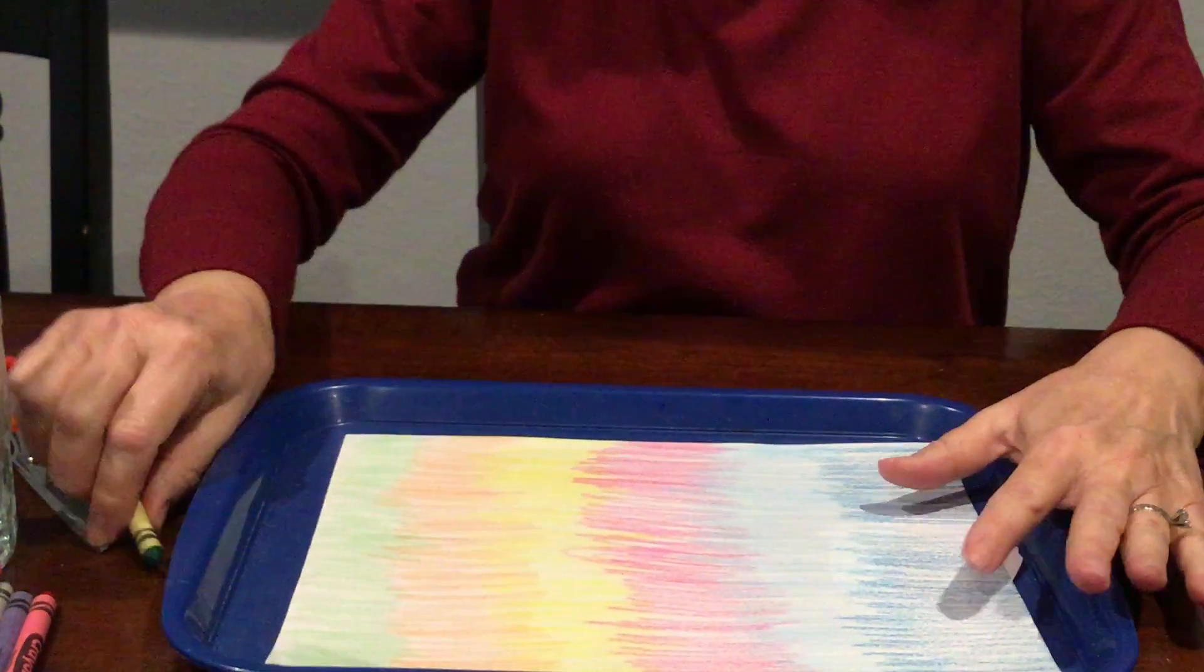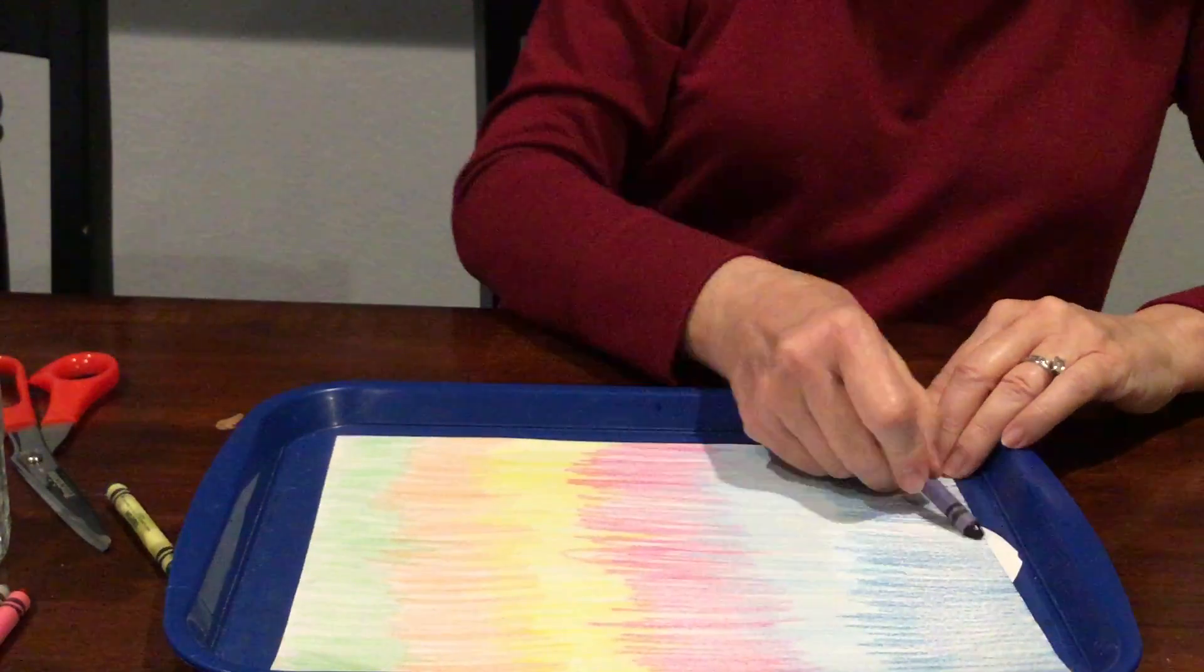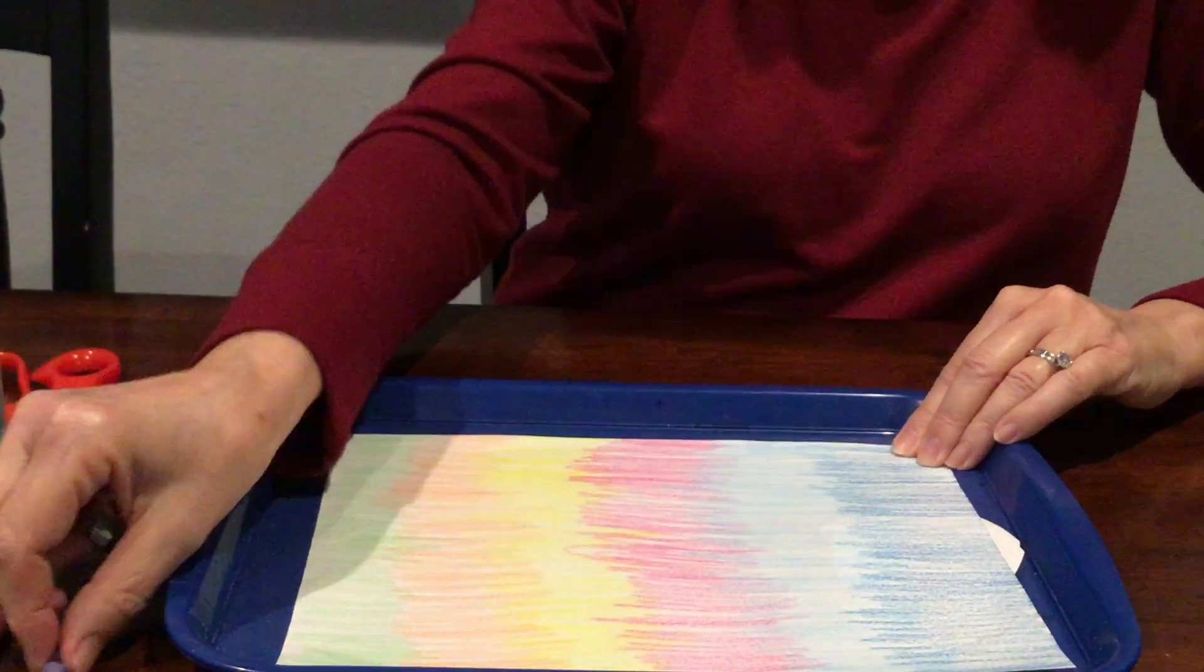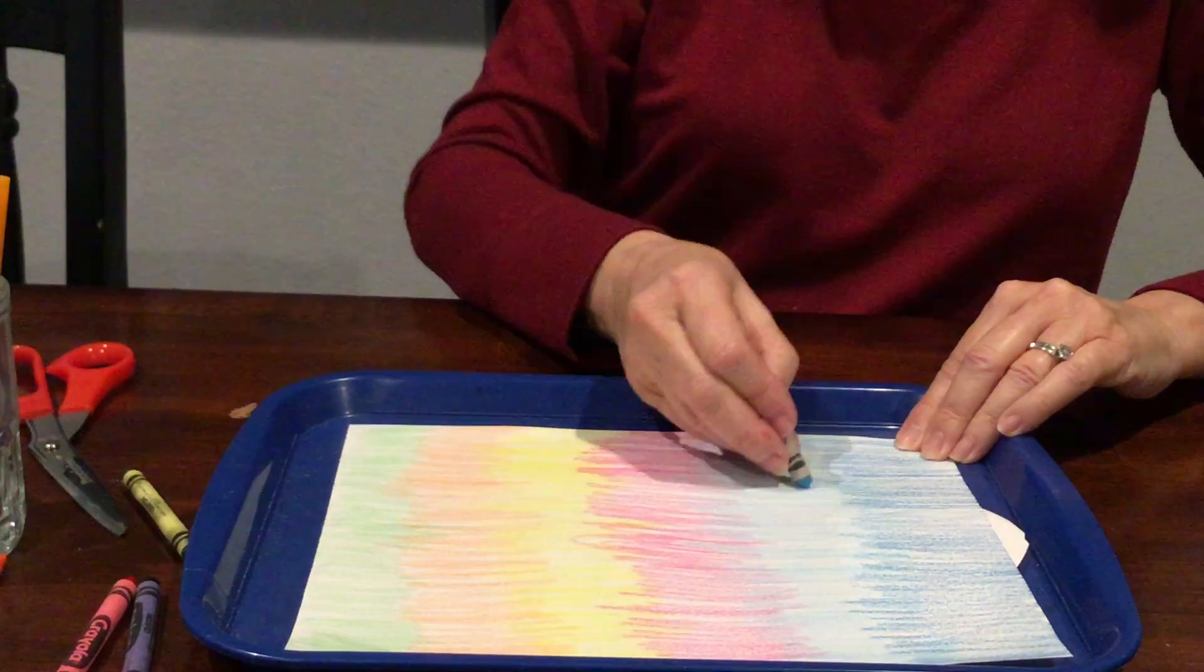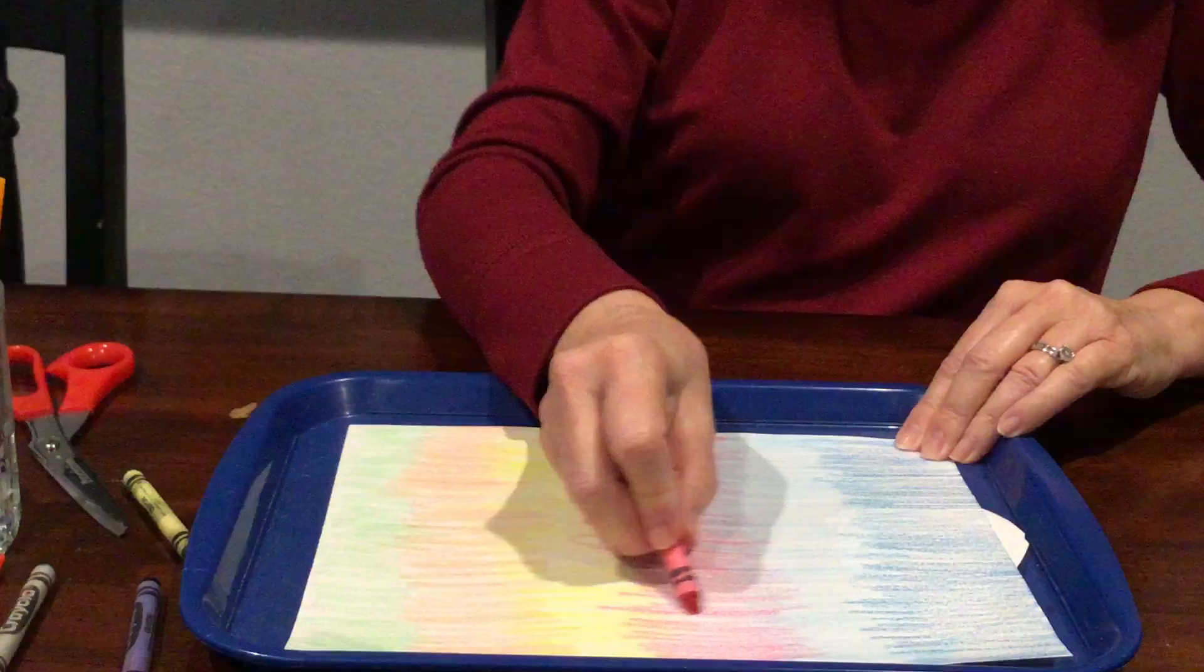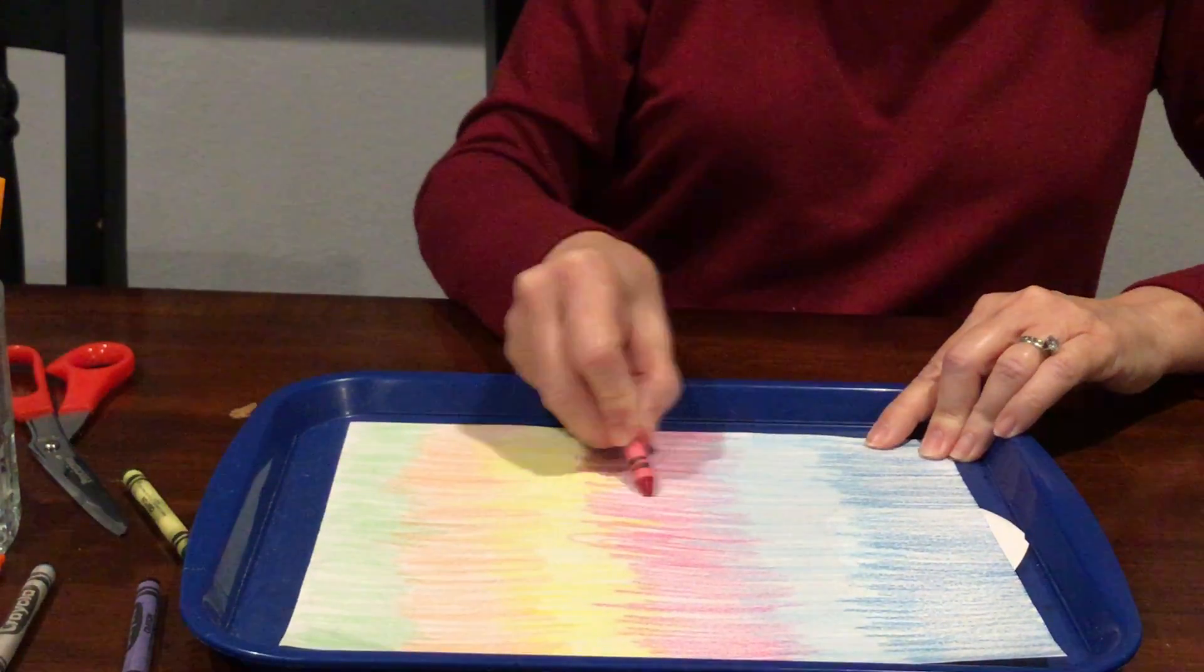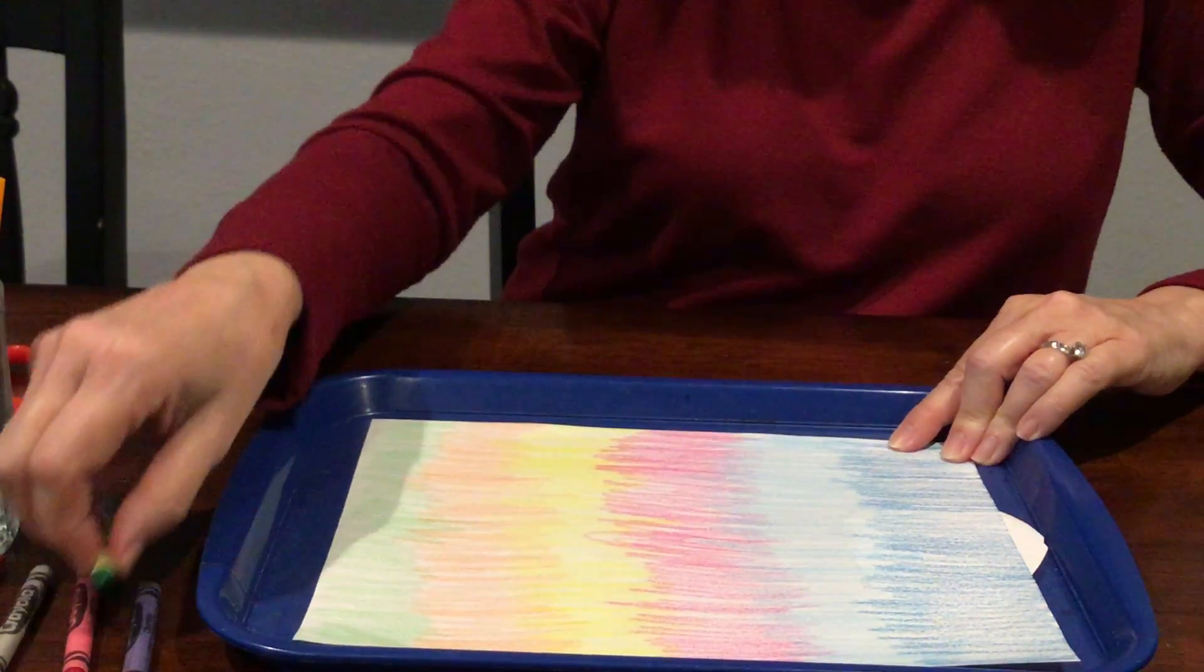Okay, so you can see I colored with my blue crayon first and I colored back and forth all the way across, filling in as much as I could, and then I did my light blue. Then I did my red and colored, and it's okay if you overlap and color part of the color that's next to it. You want to try and cover as much of that white.